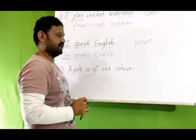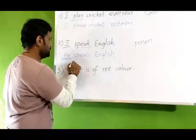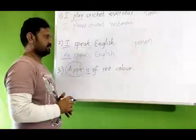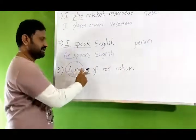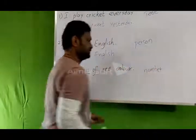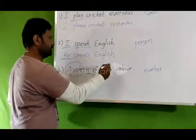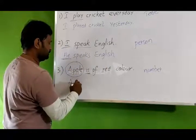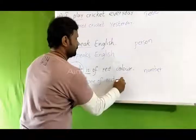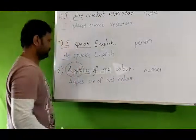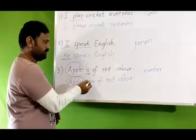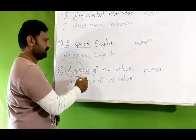Now observe the third example: 'Apple is of red color.' Apple is singular and the verb 'is' is the main verb in the sentence. Now observe how the finite verb changes its form as per the number — singular and plural. 'Apple is of red color' vs. 'Apples are of red color.' The subject 'apples' is in plural form, so the finite verb changes to 'are.'